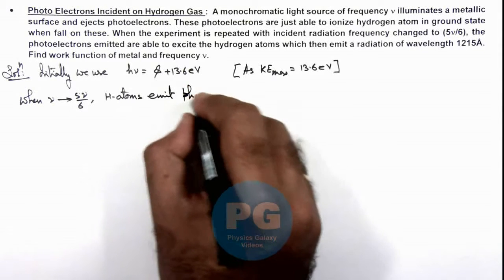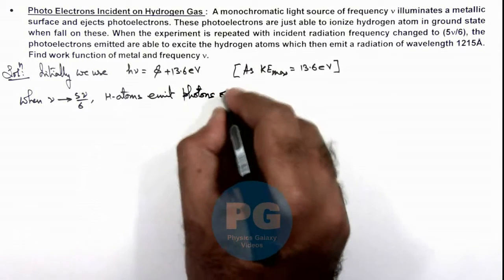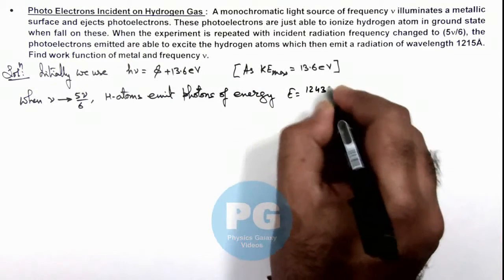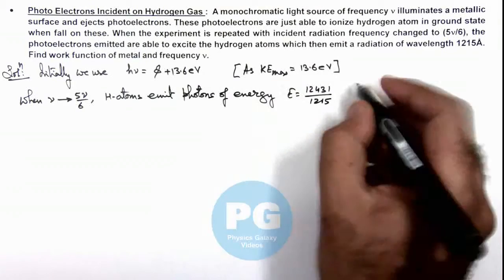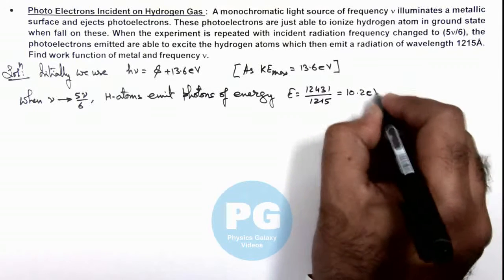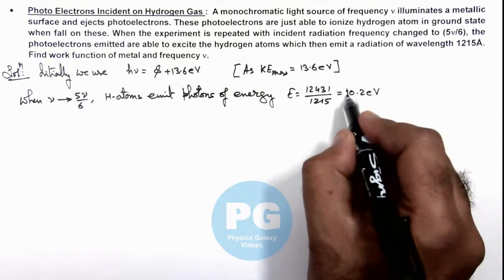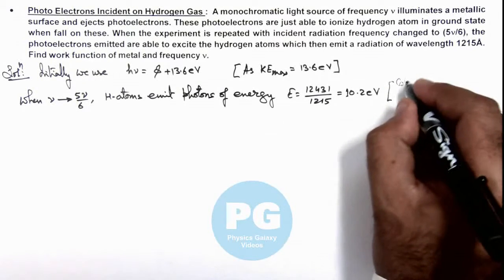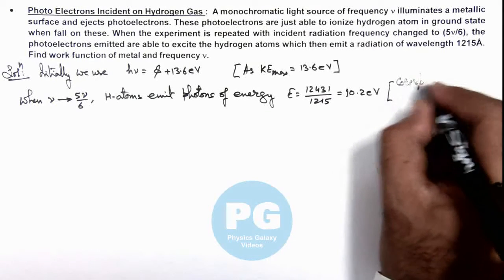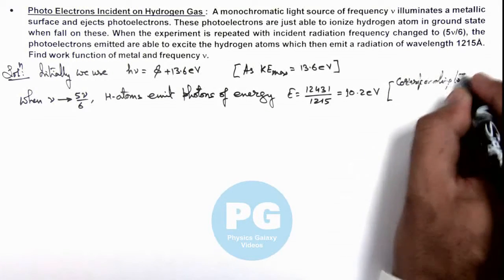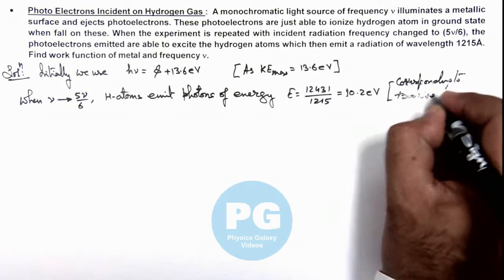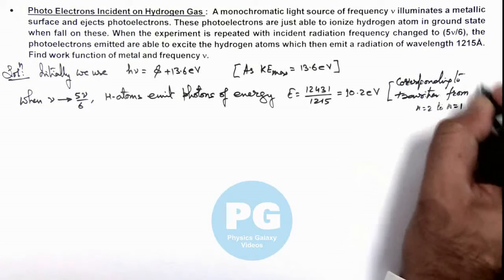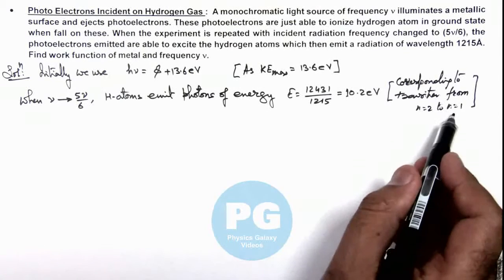photon of energy which is given by 12431 divided by 1215, which is 10.2 electron volts. And we know well for hydrogen atoms when 10.2 electron volt photon is emitted, that means it is corresponding to transition from n = 2 to n = 1.